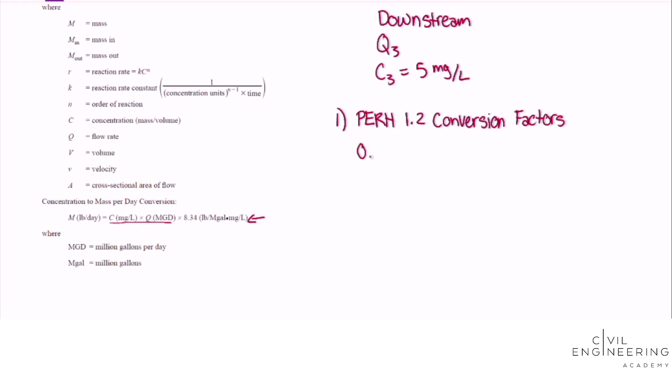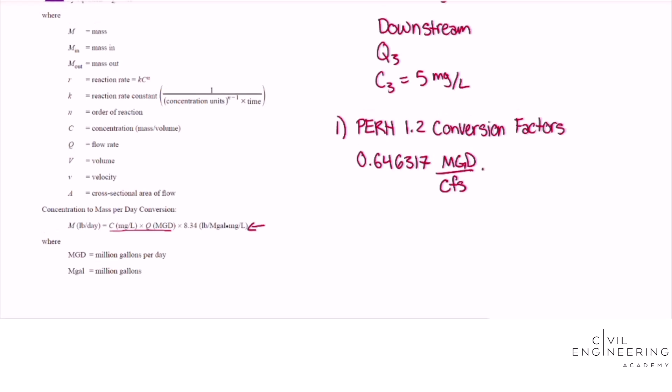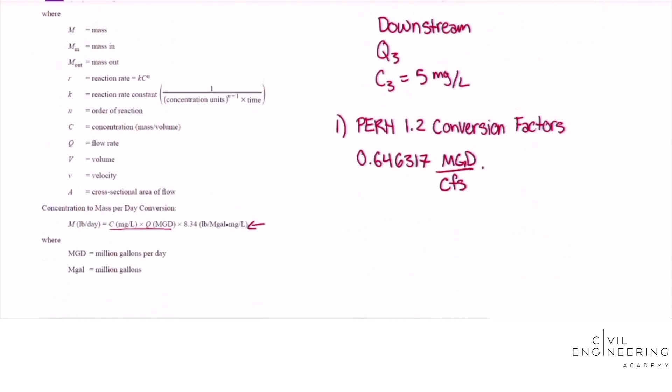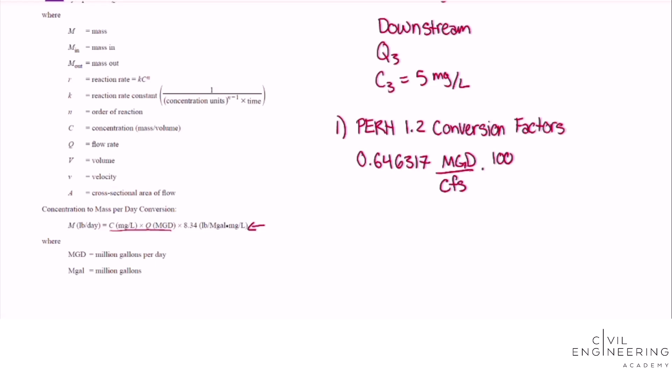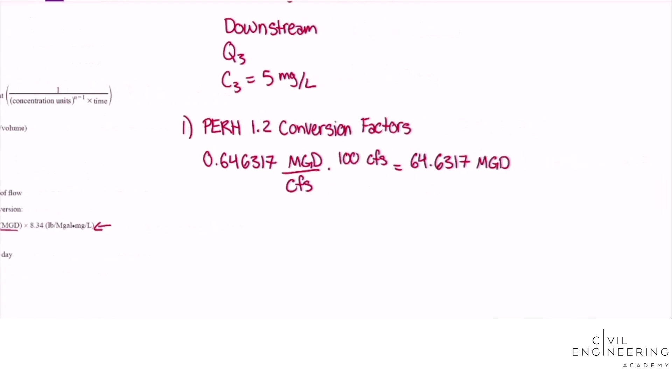That conversion is 0.646317 mgd per cfs and we'll multiply that by our 100 cfs and then we'll get 64.6317 mgd for Q2.